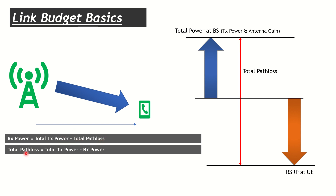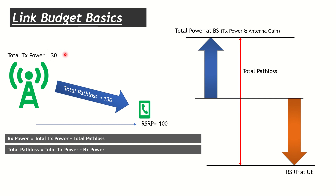Rearranging: total path loss equals total Tx power minus Rx power. Let's take an example: if my total Tx power is 30 dBm and the UE RSRP is -100 dBm, then path loss equals 30 minus (-100), which equals 130 dB. That means we transmitted at 30 dBm, experienced 130 dB of path loss, and the UE received the signal at -100 dBm RSRP.